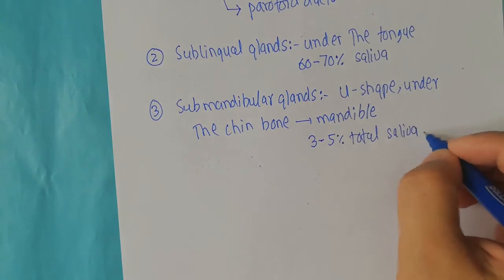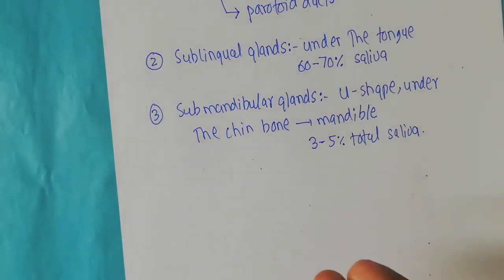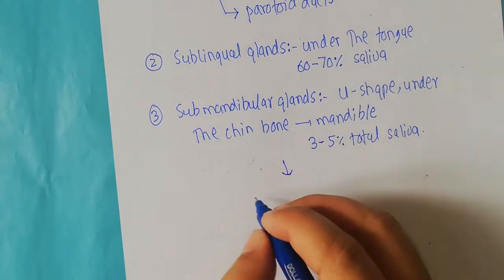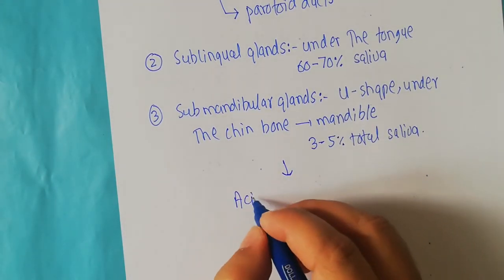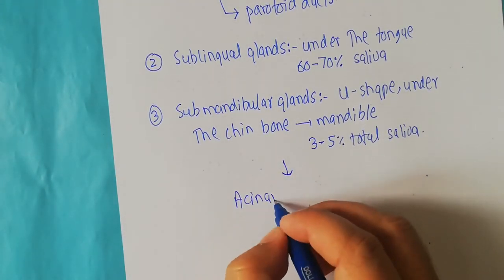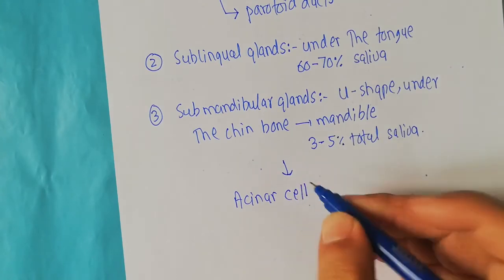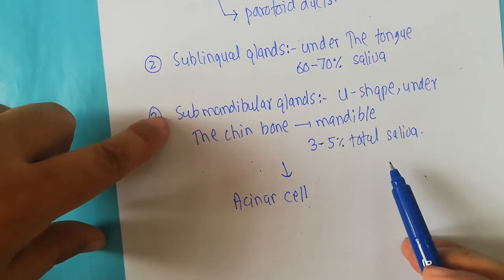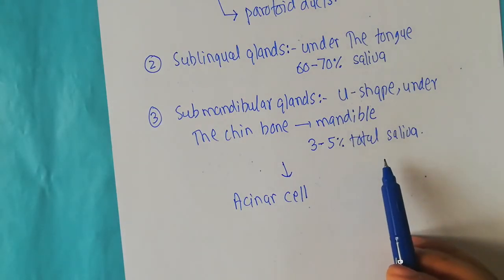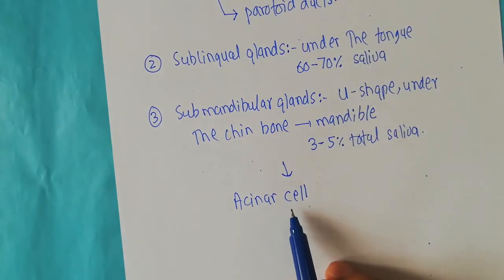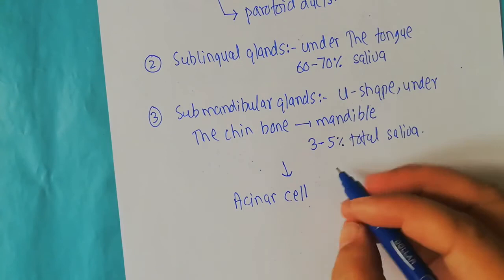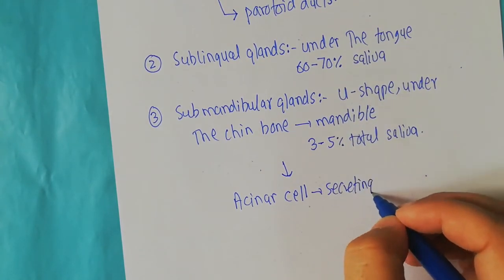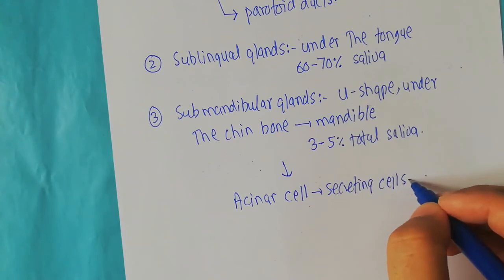All three major salivary glands — the parotid, sublingual, and submandibular — are made up of specialized secreting cells known as acinar cells. These acinar cells are the secreting cells of the major salivary glands and are of two types.